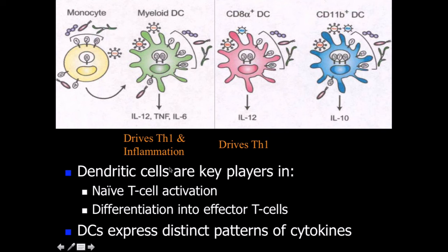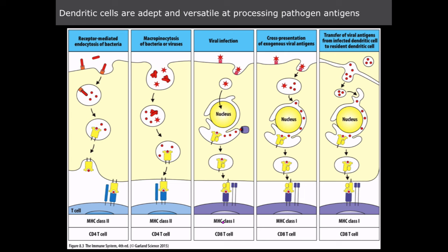Dendritic cells are key players in the activation of naive T-cells and then the differentiation into effector T-cells. They express a very distinct pattern of cytokines, and this pattern and the cytokines that they produce give rise to a lot of that bridging the gap between the adaptive and the innate immune system.